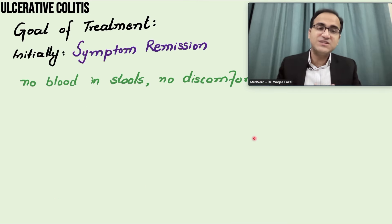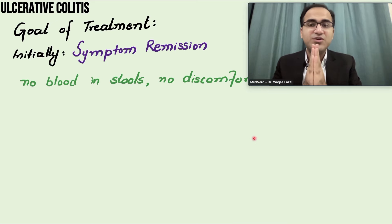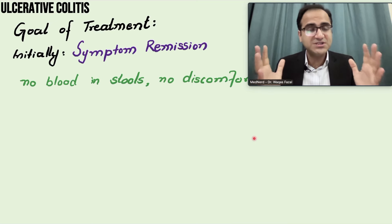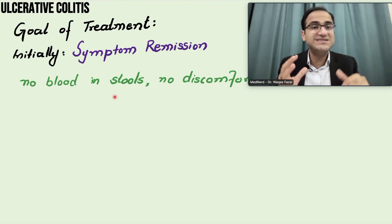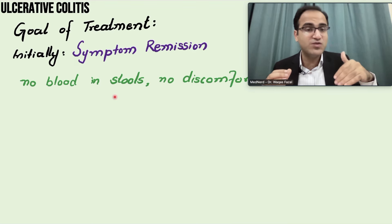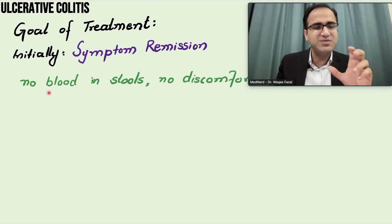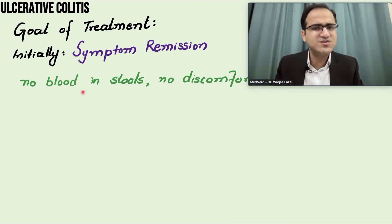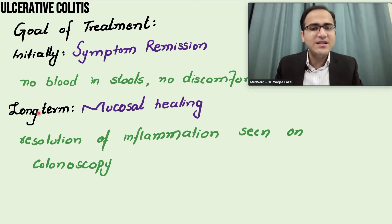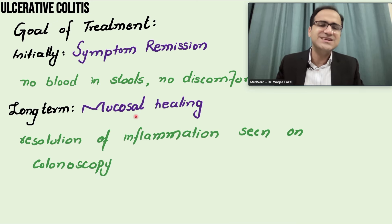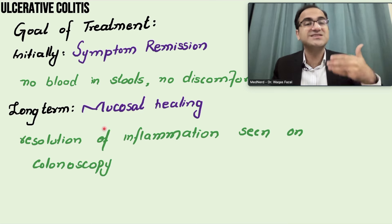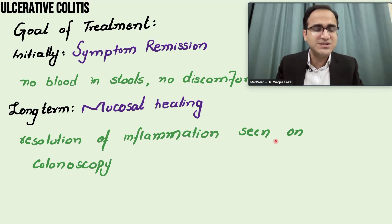When a patient with ulcerative colitis comes to you, the goal of chronic treatment is to prevent exacerbations and acute severe or fulminant episodes, and to maintain chronic control over the disease. Initially, symptom remission is the main goal — no blood in stool, no abdominal discomfort. In the long term, the important goal is mucosal healing: resolution of inflammation seen on colonoscopy.